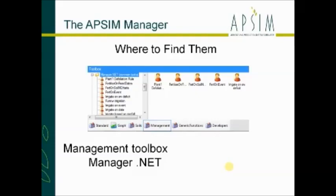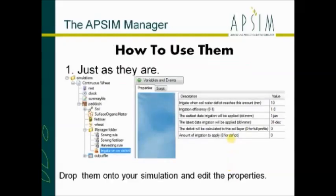So how do you use it? Where do you find them? In AppSim 7.6, they're in the management toolbox at the bottom. Specifically, we're going to be looking at the scripts that are in Manager.NET common tasks. You may hear the word 'script' and the word 'rule' — they're basically used interchangeably; they're the same thing. If you've built a simulation before, it's pretty much guaranteed that you would have used them if you've ever planted a crop. You need one of these manager rules to sow a crop, to irrigate, and to harvest.